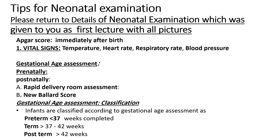For tips on examination, you should refer back to the first lecture on neonatal examination for detailed text and pictures. Tips include the APGAR score done at one and five minutes, vital signs assessment including temperature, heart rate, respiratory rate, and blood pressure in sick babies. Gestational age assessment is done prenatally by the obstetrician and postnatally by the pediatrician or neonatologist, either by rapid delivery room assessment or by the detailed New Ballard scoring system.